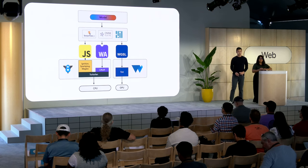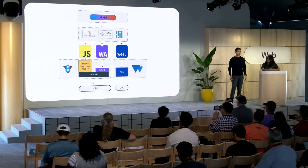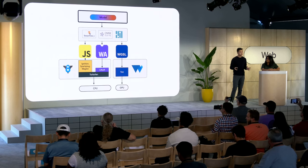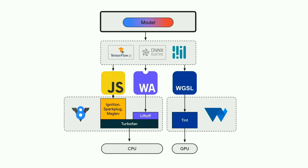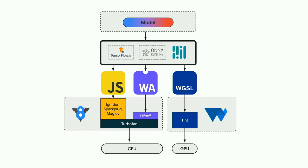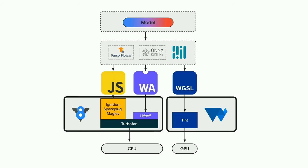Let's take a step back to understand how AI workloads can run on the web today. Application developers and researchers build and train models. Those models can execute in the browser, making use of a runtime like TensorFlow.js, ONNX Runtime Web, or MediaPipe. Runtimes make use of web APIs for execution. All those runtimes eventually bottom out into running on the CPU through JavaScript or WebAssembly, or on the GPU with WebGL or WebGPU. We're here to talk about how WebAssembly and WebGPU are evolving to make AI and machine learning workloads run better.